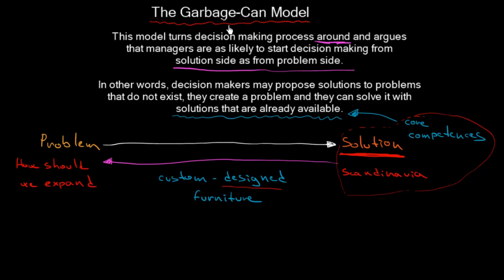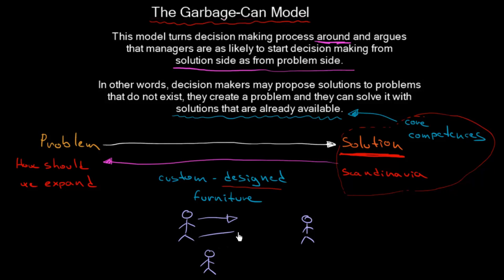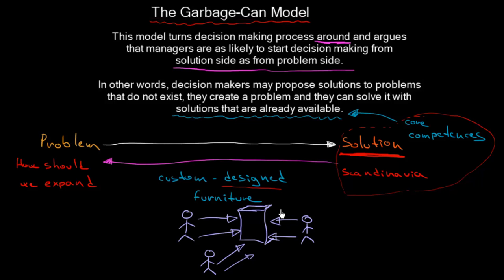Why is it called the garbage can model? Within an organization there are a large number of managers. They throw out solutions they can deliver, propose problems that should be solved, and compete for resources — and it all ends up in one garbage can. That's why it got this name: the garbage can model.